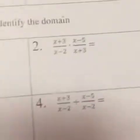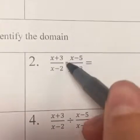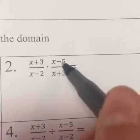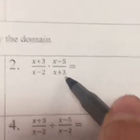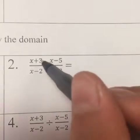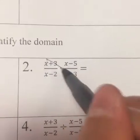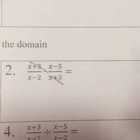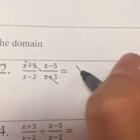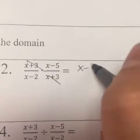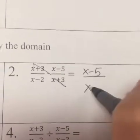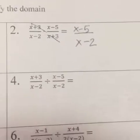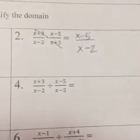The second example is (x plus three) over (x minus two) times (x minus five) over (x plus three). As you can see, both the top and the bottom have x plus three, so we can cancel them out. The only thing left is x minus five over x minus two. That's how you do the multiplication.